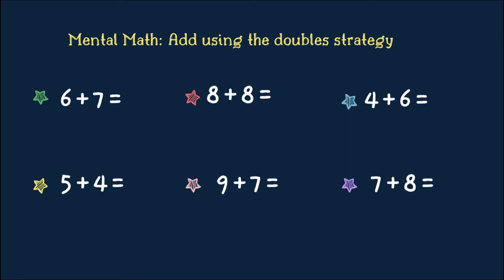What I want you to do is to split the larger number in your mind. Let's do the first one. 6 plus 7. 6 is our smaller number. So, we'll split the 7. Remember to always double your smaller number. So, 6 plus 6 is 12. 7 is one more. So, 12 plus 1? 13.